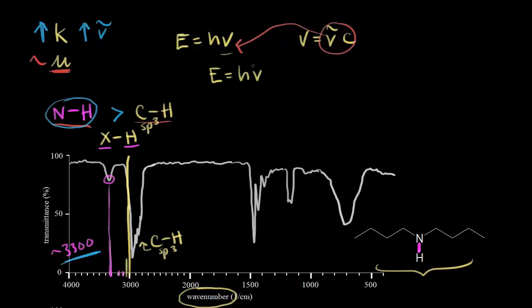This is one of the reasons why you see IR spectra done in wave numbers, because you can also think about energy. If you increase the wave number, you're talking about increased energy. More energy is needed to stretch a stronger bond, so it takes more energy to stretch the nitrogen-hydrogen bond. Think about a bond as a spring: if you have a really stiff or strong spring, it takes more energy to stretch it compared to a looser spring.